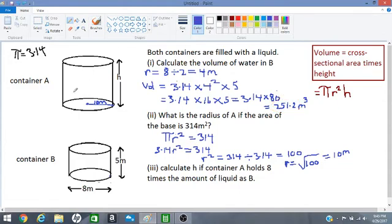A is a bigger container so it holds more water than B. So the volume of A is equal to 8 times 251.2.